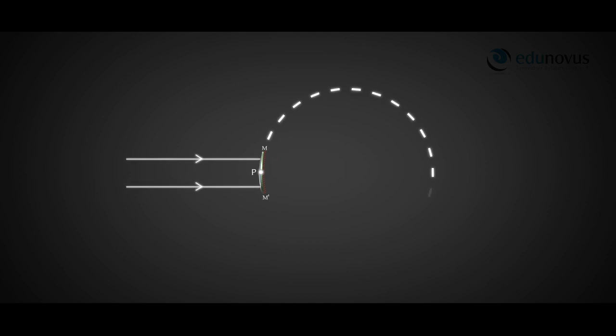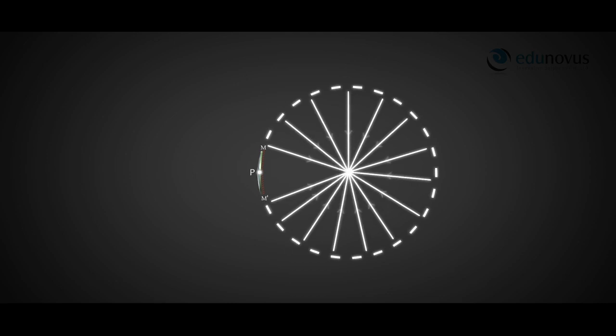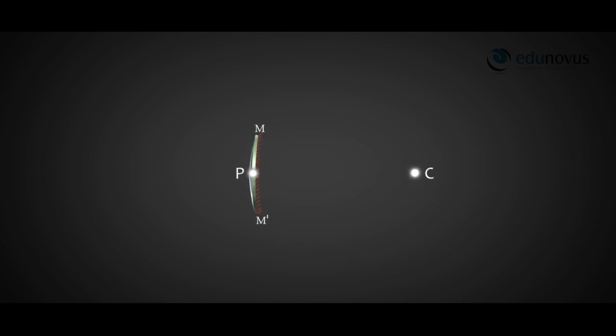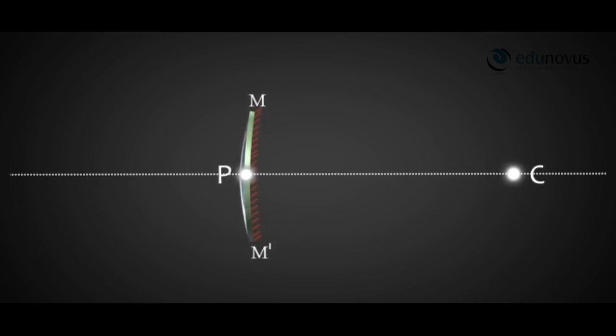The convex mirror we consider is part of a spherical shell. The center of that spherical shell is called the center of curvature, denoted by C. When you join the center of curvature C and the pole P, the straight line formed is called the principal axis.